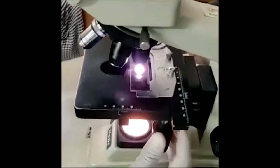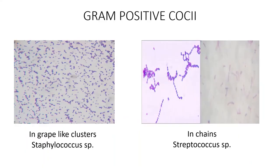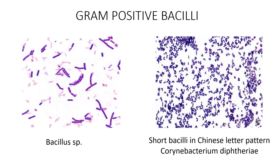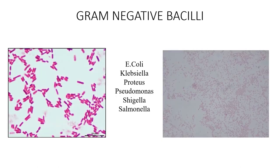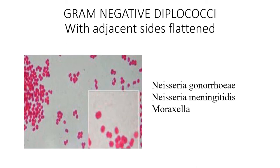A few drops of oil are put on the slide and examination is done under the microscope, first under low power 10x and then under the oil immersion lens, the 100x objective. There are various microscopic appearances of bacteria. Purple colored spherical bacteria — gram positive cocci — can be arranged in grape-like clusters suggestive of Staphylococcus, or chains suggestive of Streptococcus. Purple colored rods are gram positive bacilli, which can be Bacillus or short bacilli in Corynebacterium diphtheriae in a Chinese letter pattern. Gram positive branching filaments are seen in Nocardia and Actinomyces. Pink colored rods are gram negative bacilli, seen in the Enterobacteriaceae family and Pseudomonas. Gram negative diplococci are Moraxella and Neisseria.